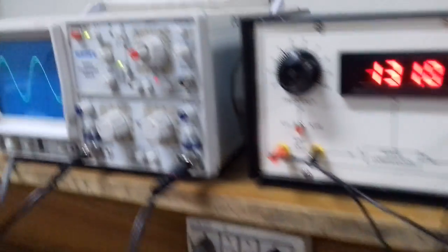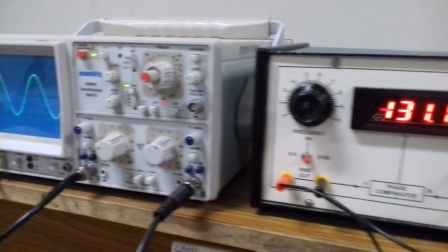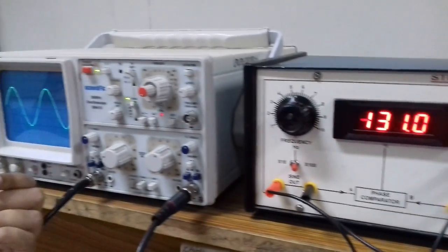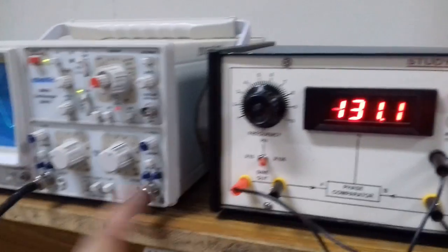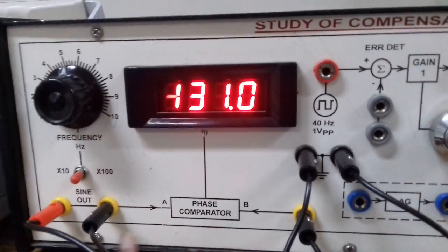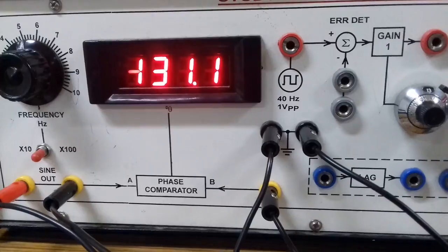Input at different frequencies will be checked on CRO. Output at different frequencies is going to be checked on another channel of CRO. And the phase from both input and output, after being compared, will be noted down from here.